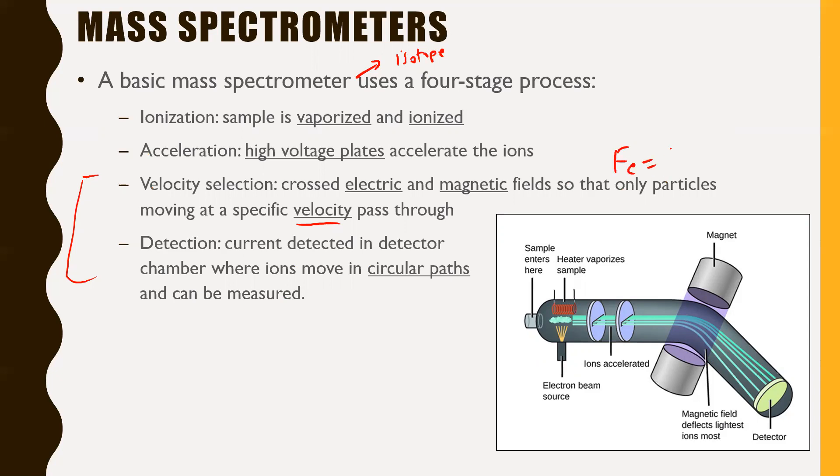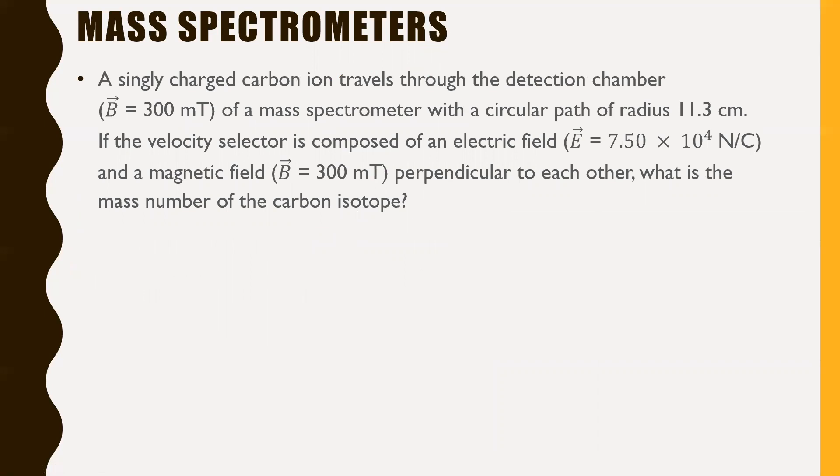All right. So here's a question. A singly charged carbon ion travels through the detection chamber where your magnetic field strength is 300 milliteslas of a mass spectrometer with a circular path of radius 11.3 centimeters. If the velocity selector, this is the earlier step, is composed of an electric field with this strength E = 7.50 × 10⁴ N/C and a magnetic field B = 300 mT perpendicular to each other. What is the mass number of the carbon isotopes? In other words, what is the atomic mass of this isotope of carbon? It'll just be a whole number. Another thing I'll just mention on this one, it's weird how the magnetic field strength in this is the same as this. It doesn't have to be that way. That's just a coincidence. But please pause the video here. Give it a try and I'll go over it in just a second.